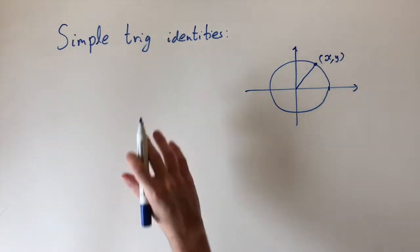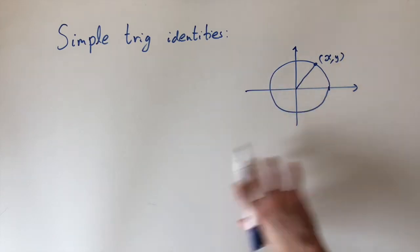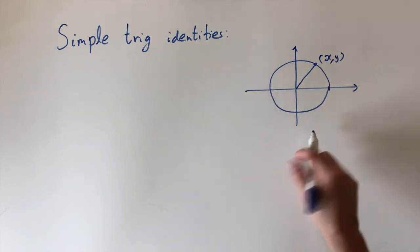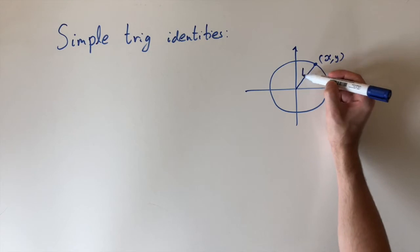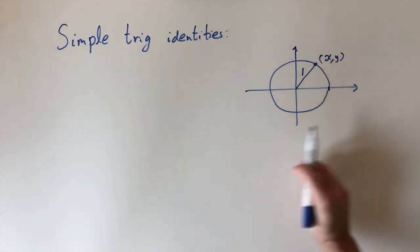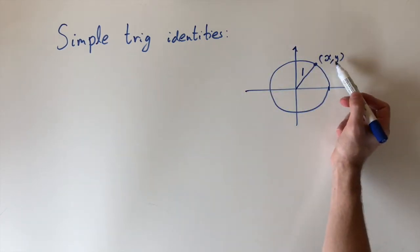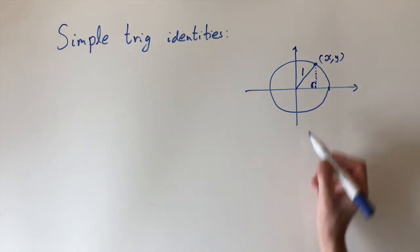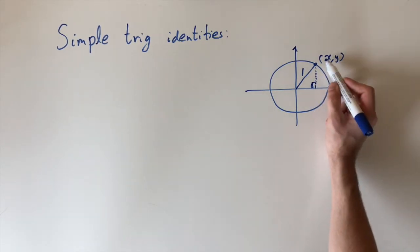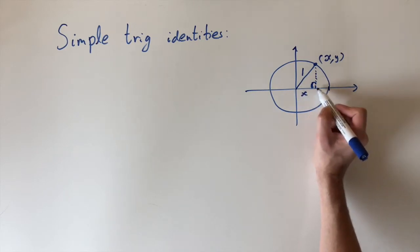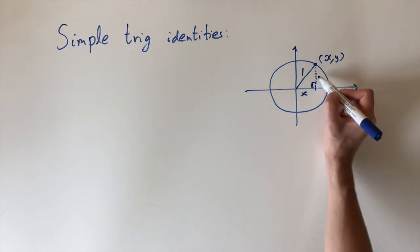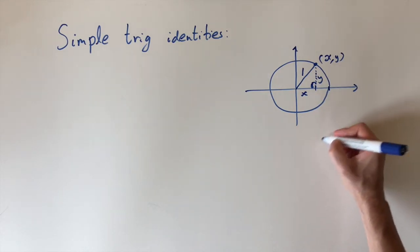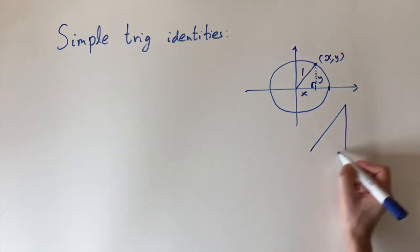To see why these identities are true, it all starts with the unit circle — a circle around the origin with radius one, so this length is one. We consider any point on the circle called (x, y), drop down a vertical line, and form a right-angle triangle. This is 90 degrees, and since this point is (x, y), the horizontal distance is x and the vertical height is y.